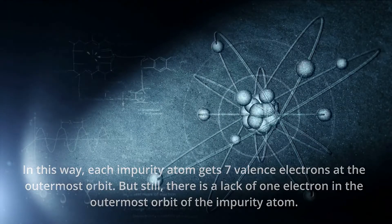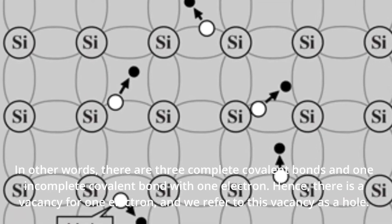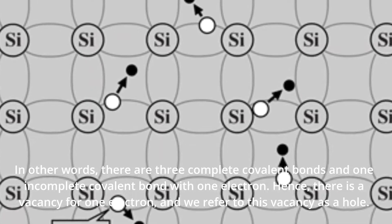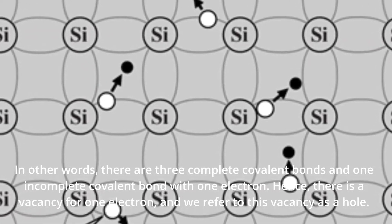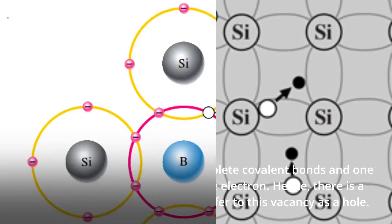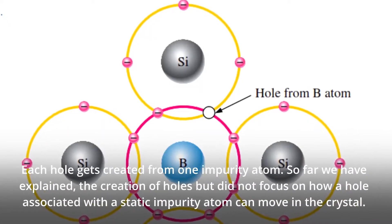In other words, there are three complete covalent bonds and one incomplete covalent bond with one electron. Hence, there is a vacancy for one electron, and we refer to this vacancy as a hole. Each hole gets created from one impurity atom.